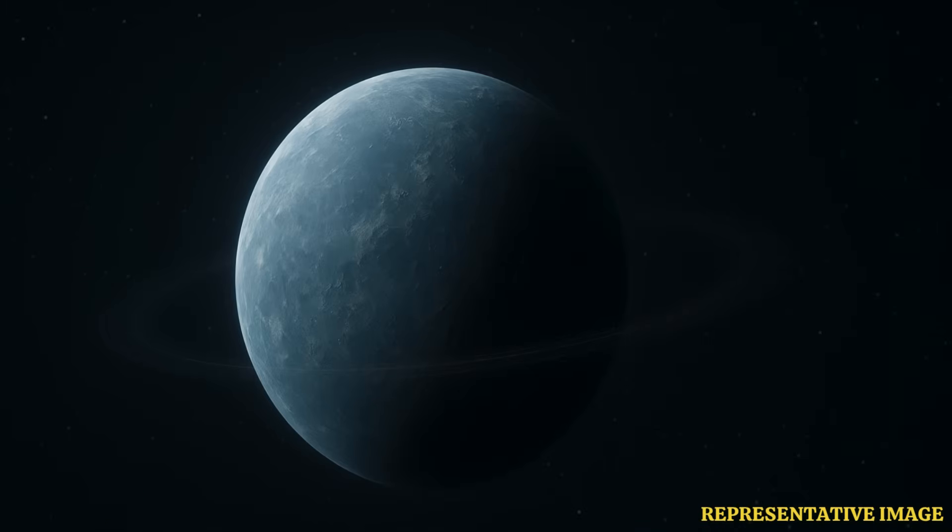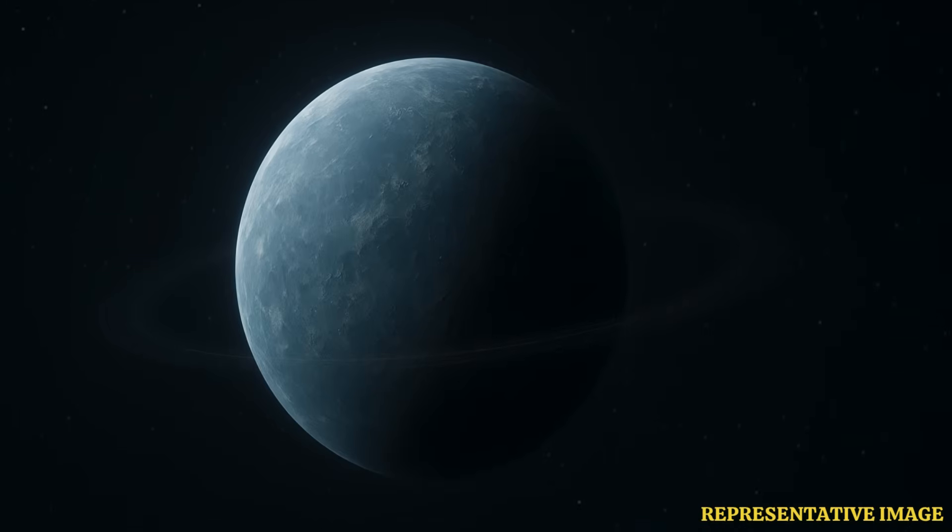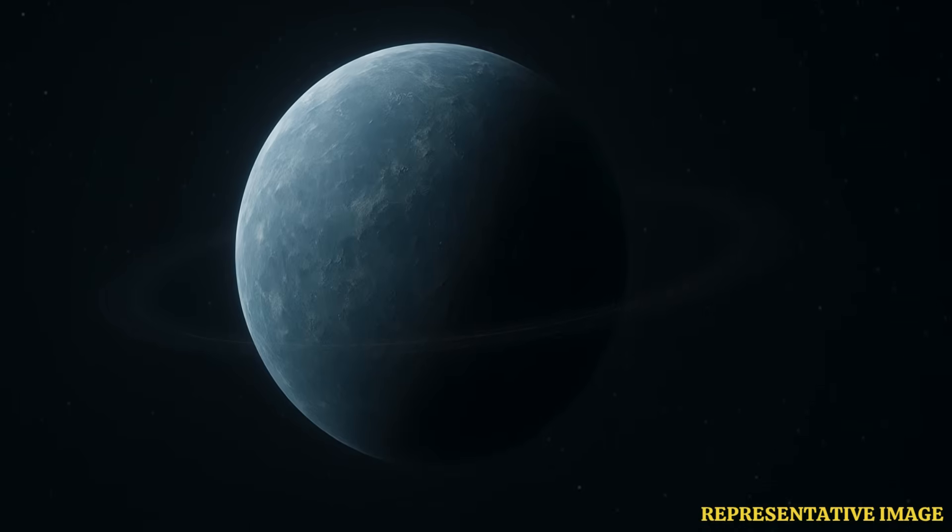It is very well known that there are eight planets in our solar system and then a dwarf planet Pluto. But now, the astronomers are suspecting there is a 7% chance that another planet is hiding in the Oort cloud near Earth.